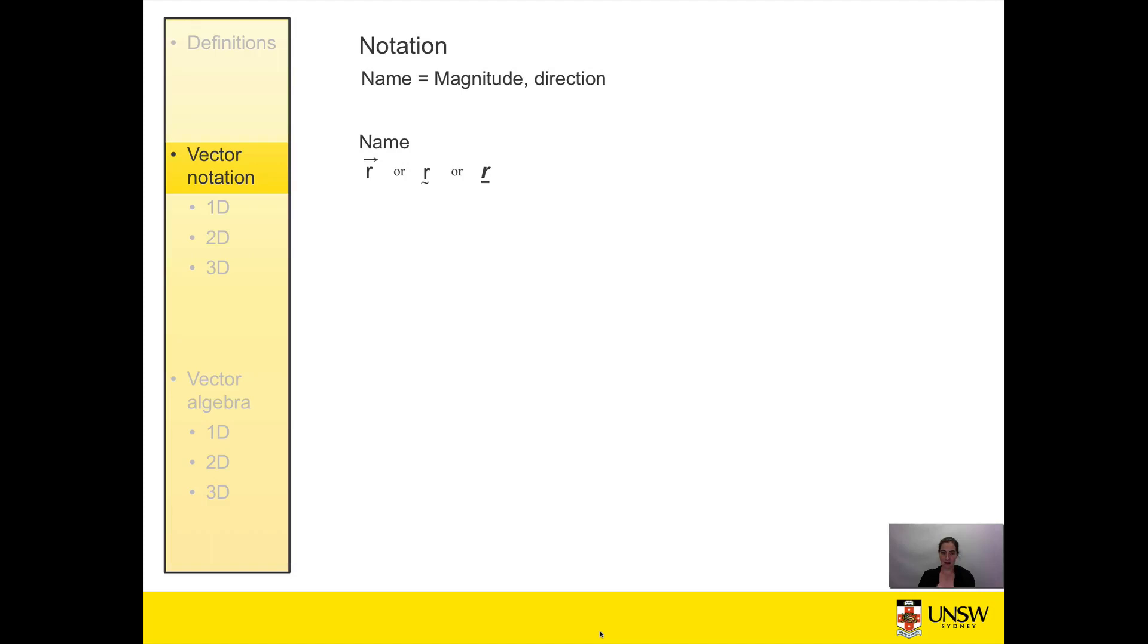Either with a right hand pointing arrow, with a tilde underneath, or some combination of bold, italicized, and underlined. In this course I will always write the vector using a right hand arrow except in a few rare cases where my word processor objects and then you will see it written as a bold italicized letter.